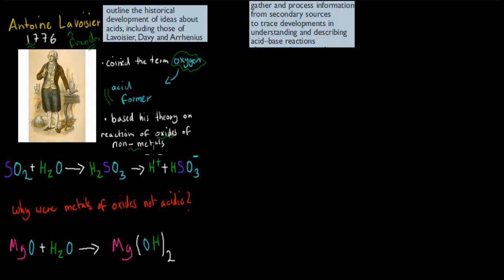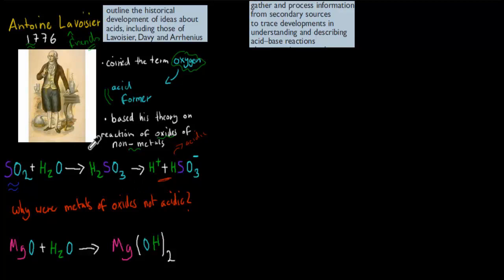That makes sense to us because we know hydrogen ions produced when sulfur dioxide is put into water make it acidic. But Lavoisier didn't link the acidic nature to hydrogen ions — he linked it to the oxygen within sulfur dioxide. So he was convinced that oxygen causes things to be acidic.